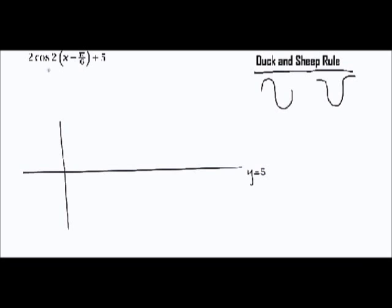For example, we have a function like 2 cosine of 2x plus π over 6, plus 5. This is a cosine function increased by 5, moved left by π over 6, expanded two times on the y-axis, and shrunk two times on the x-axis. It's easy to say, but it's really hard to draw on paper.